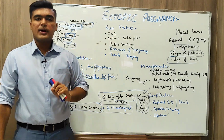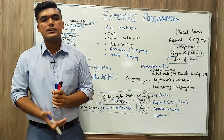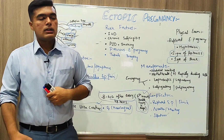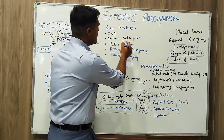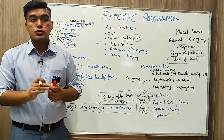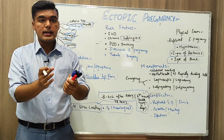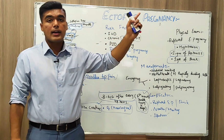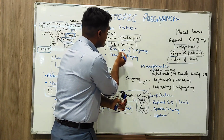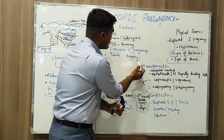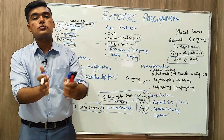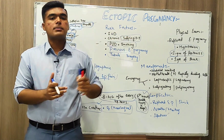Risk factors include intrauterine devices, previous ectopic pregnancy, and salpingitis — which is inflammation of the fallopian tube. If chronic salpingitis is present, it points us toward ectopic pregnancy. Other risk factors include PID (pelvic inflammatory disease), smoking, and prior tubal surgery. These are important risk factors that lead to the condition of ectopic pregnancy.